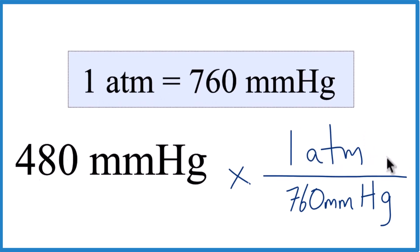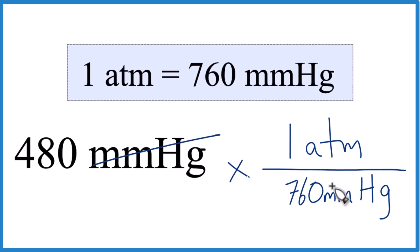So when we do the math, when we multiply millimeters of mercury on the top and the bottom, they cancel out. We're left with atmospheres. That's what we're looking for.